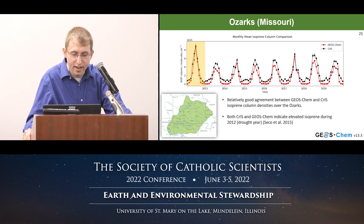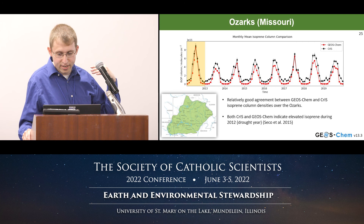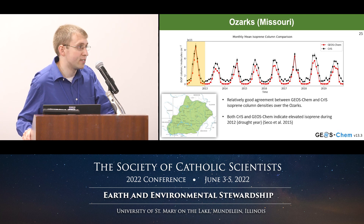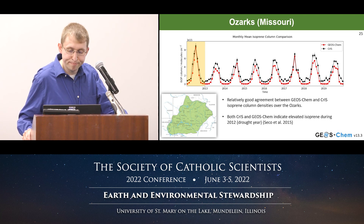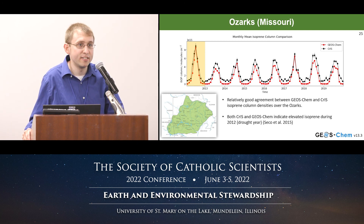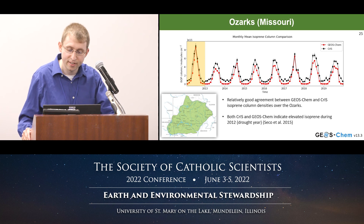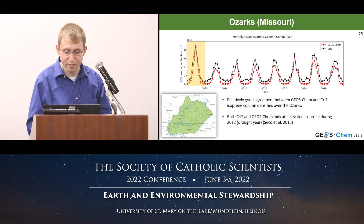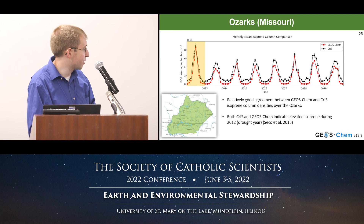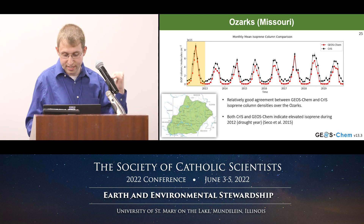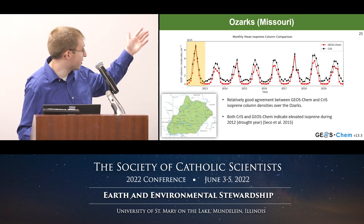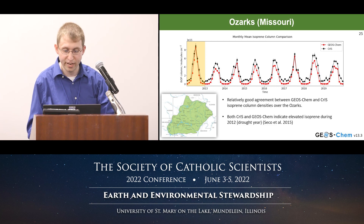Looking at the Ozarks in Missouri: we have a record of isoprene column from 2012 to 2020. The black line is the satellite measurement from the CRIS instrument, and the red is the GEOS-Chem modeled quantity — a large chemical transport model used to understand atmospheric chemistry. There is relatively good agreement between GEOS-Chem and CRIS over this period. Notably, 2012 was a drought year in the Ozarks, and both the model and satellite observe elevated isoprene levels that year, showing that we can detect climatological impacts in the record.